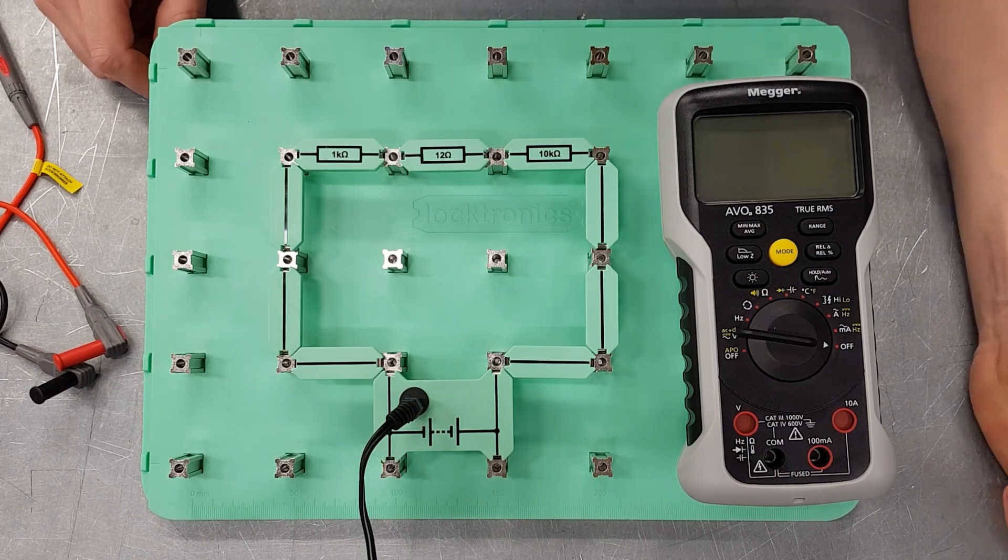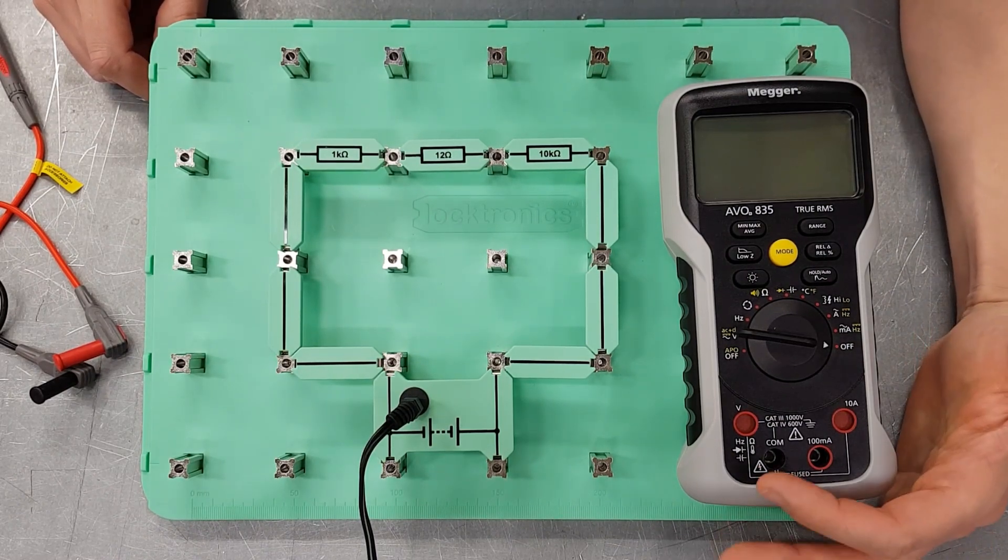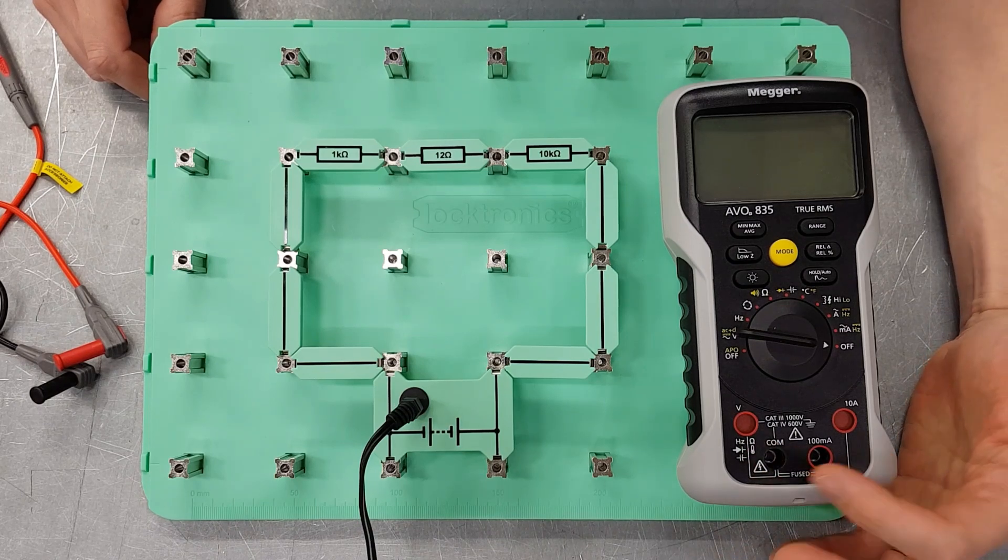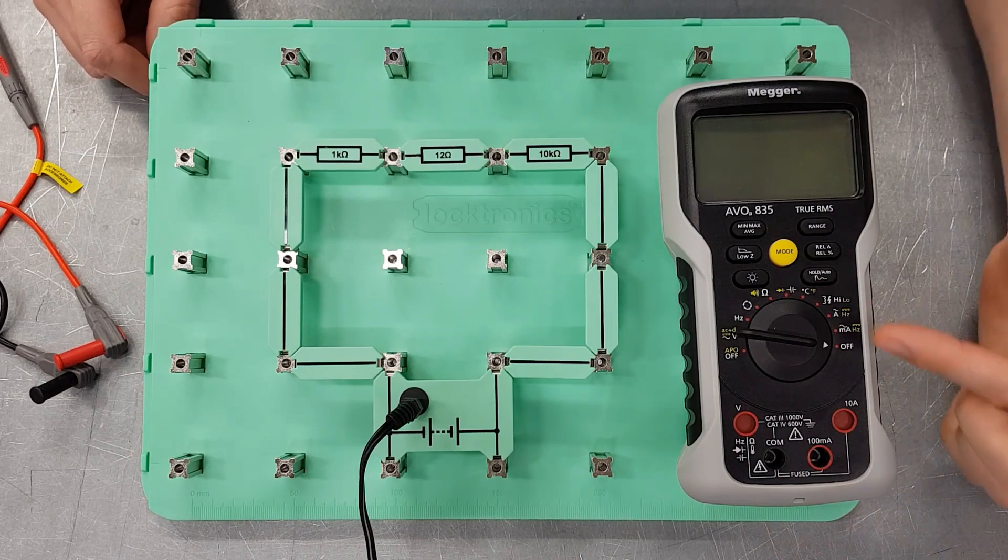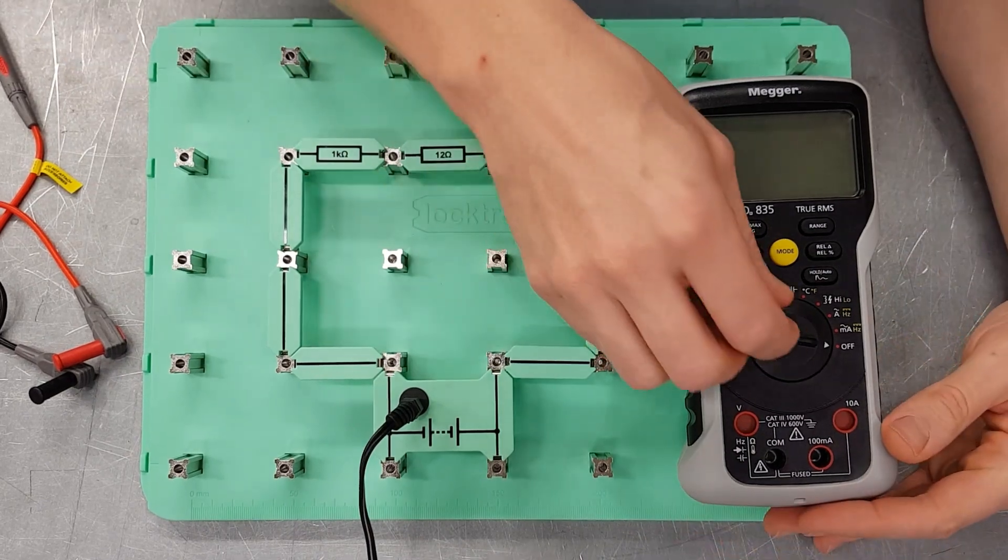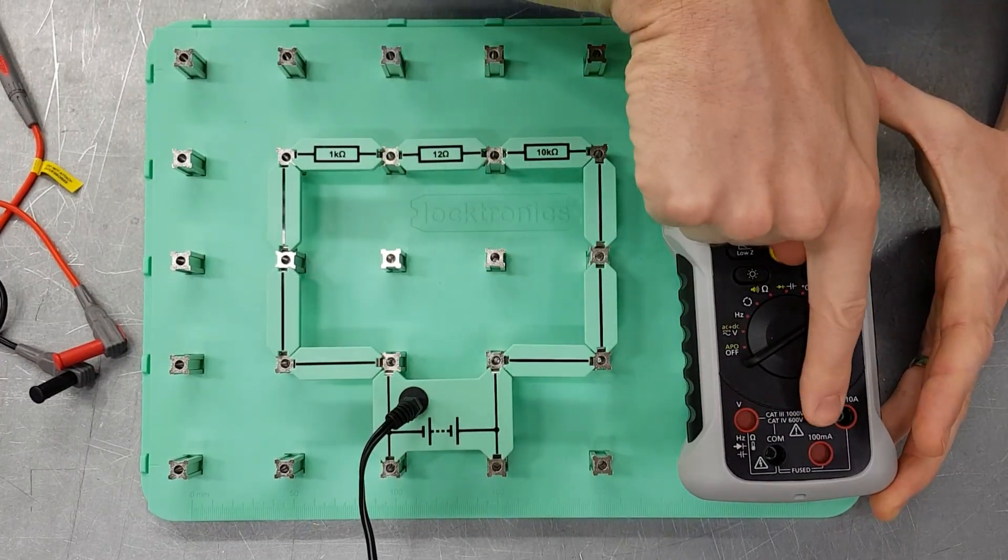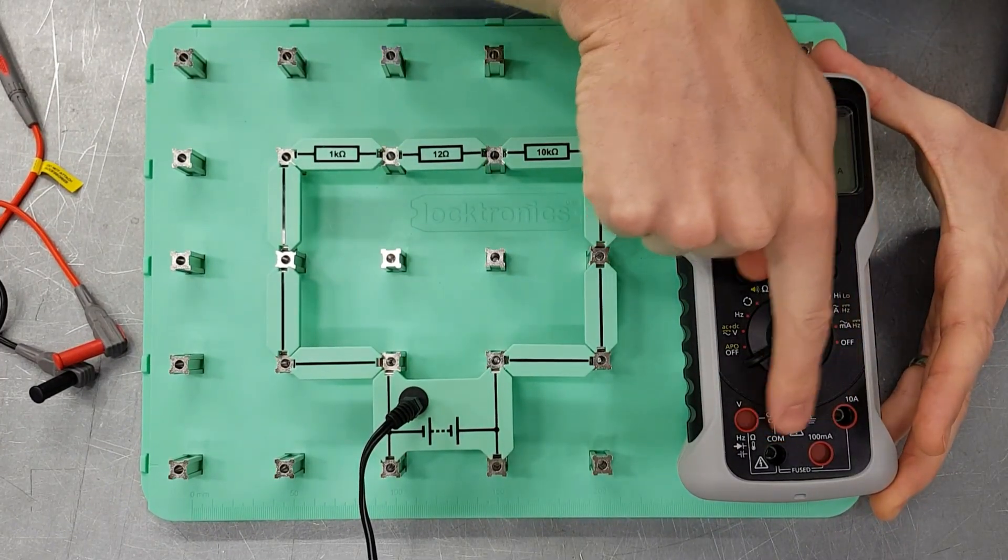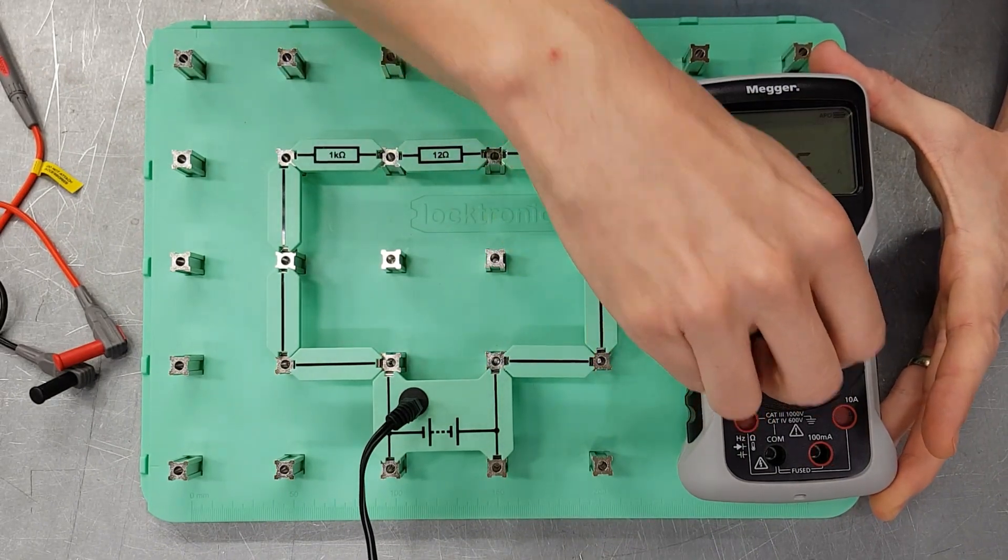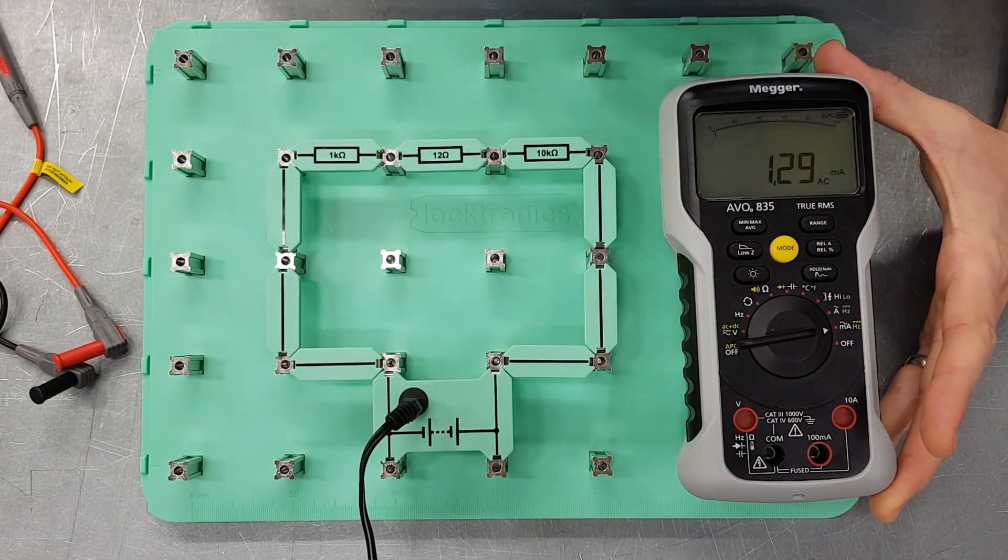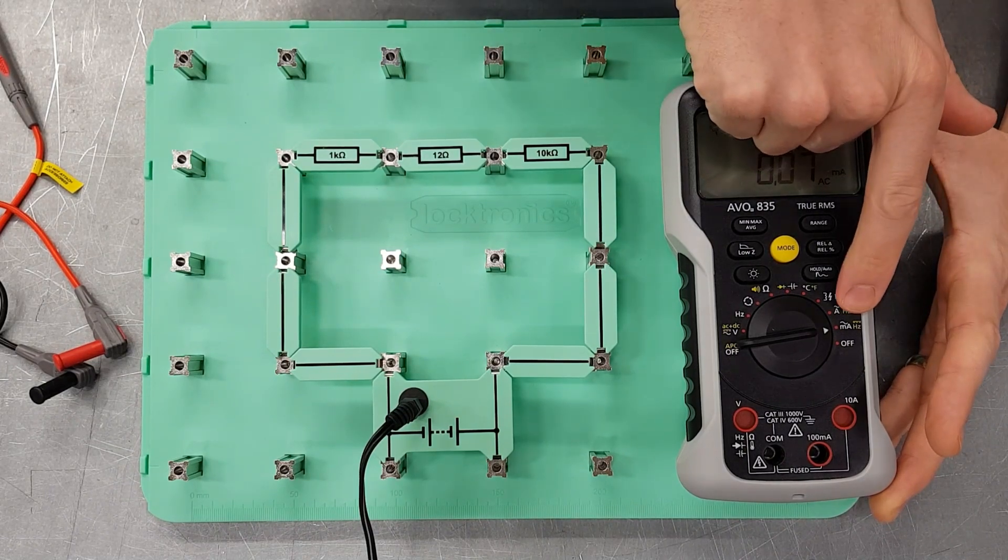So we're going to start off by measuring current. We're going to start off by measuring amps. If you look down here at the bottom of the meter we've got these four terminals. Now the really clever thing about the Evo 835 is that as you twist to the different settings, the terminals open up and block off as required. That's really handy because we can damage our multimeter quite badly if we set it up in the wrong way. First of all, we'll turn to the milliamps range.